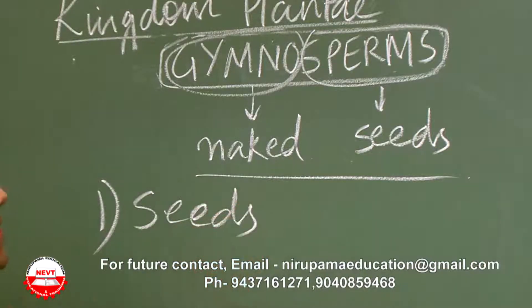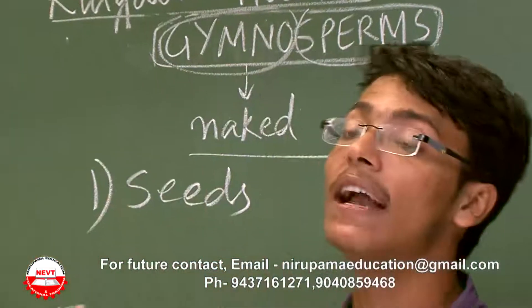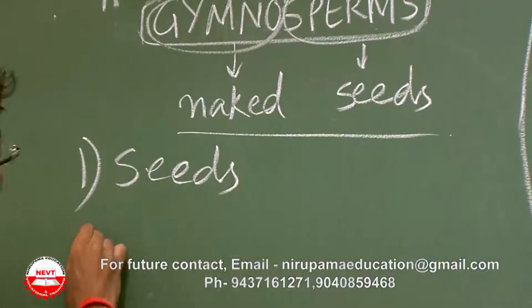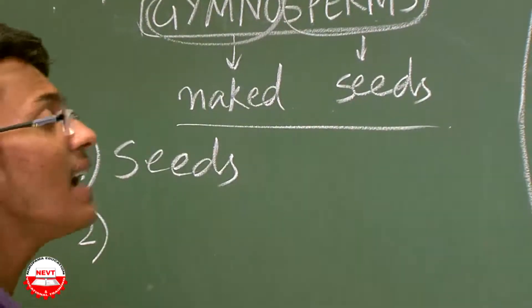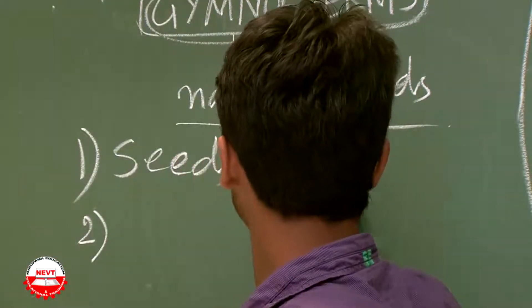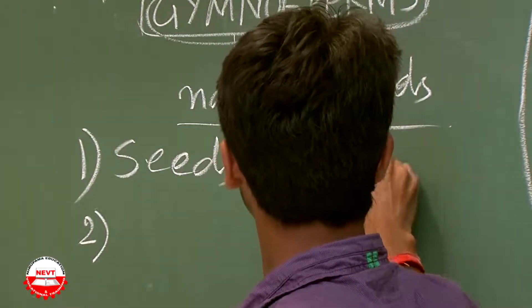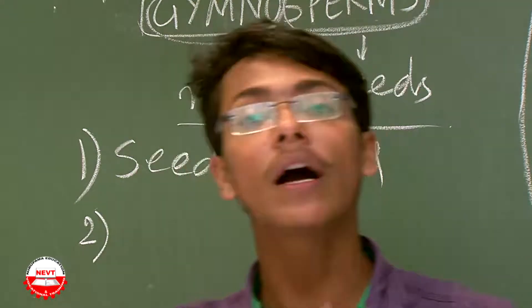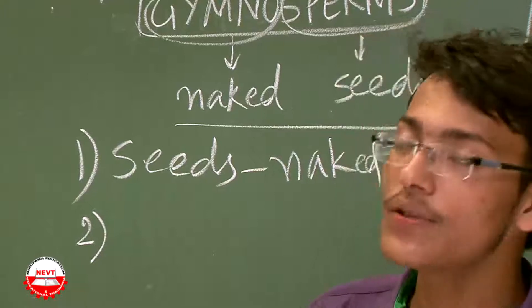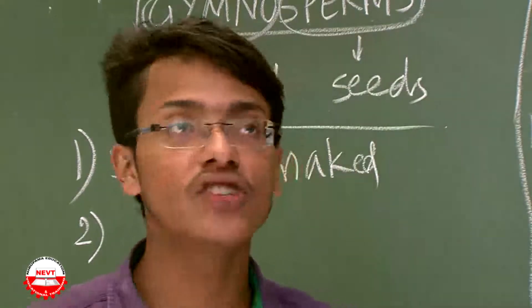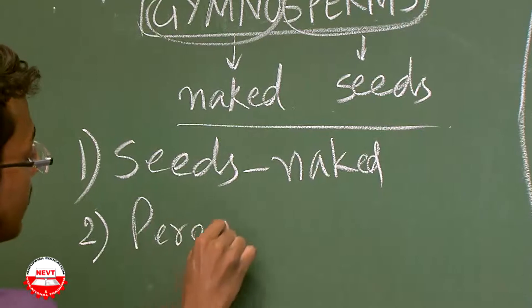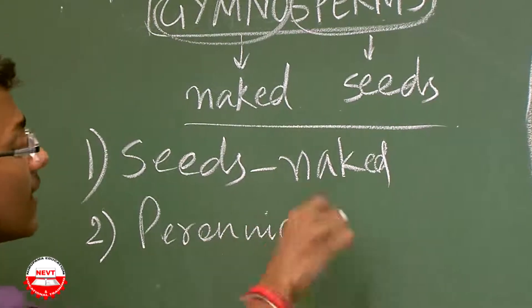The first characteristic of gymnosperms is that they have seeds. The second property is that the seeds are naked — there is no covering of the seeds. Another key characteristic is that gymnosperms are perennial.